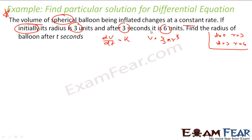We have to find the radius at time t — that is what we need to find. The question says the volume of this balloon is changing at a constant rate, that is dV/dt is constant, and V = 4/3 π r³.